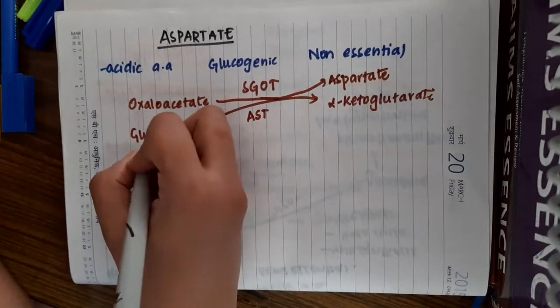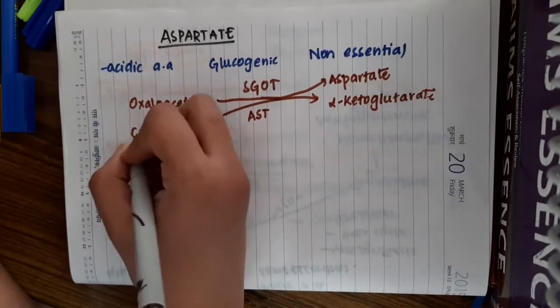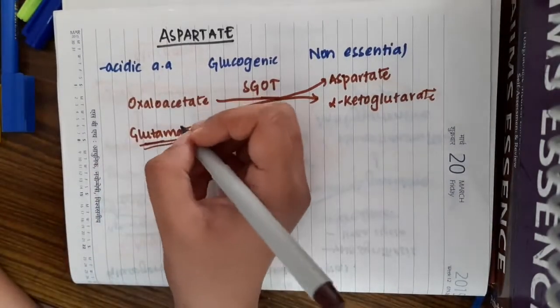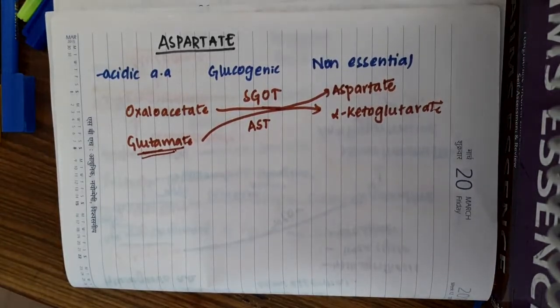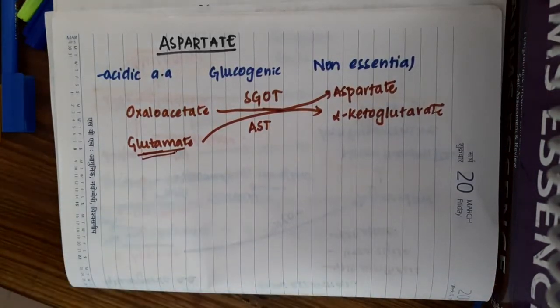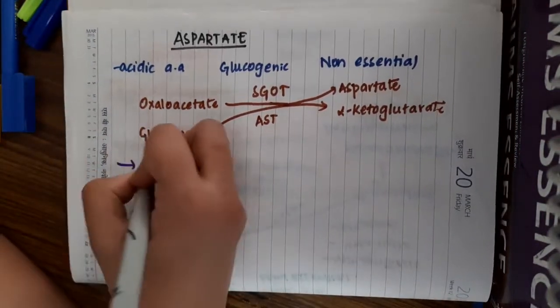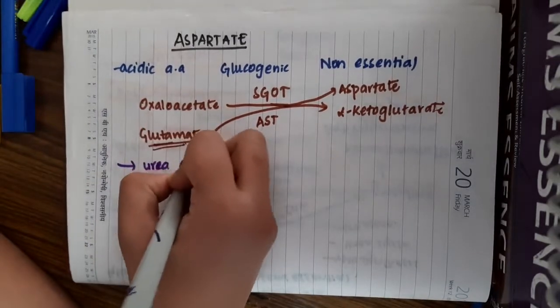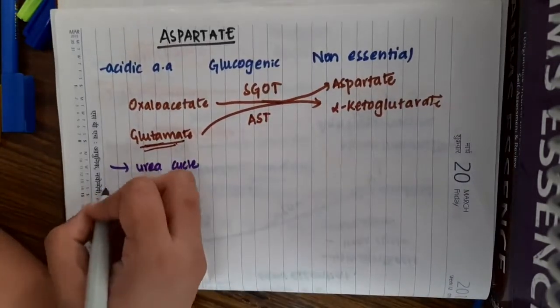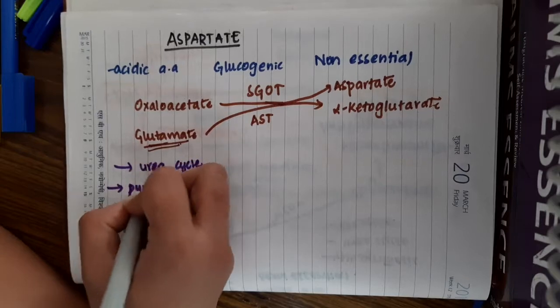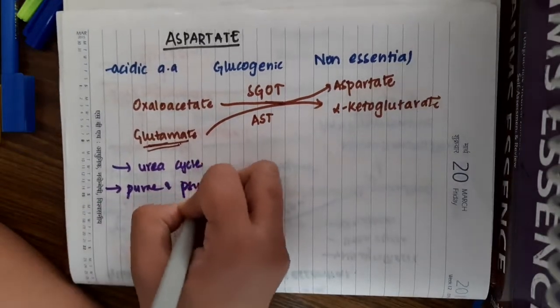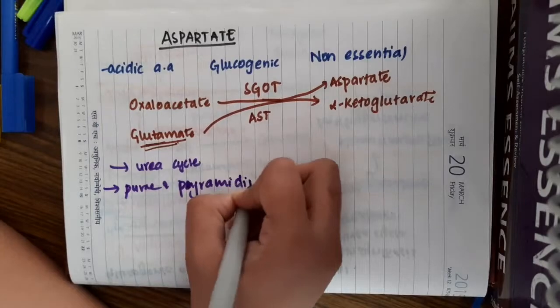During this process, the amino group of glutamate is transferred to the oxaloacetate. Now, what are the uses of this aspartate? Aspartate is useful in urea cycle and it is also useful in purine and pyrimidine synthesis.